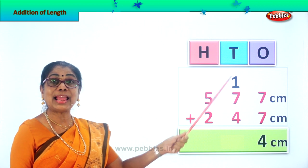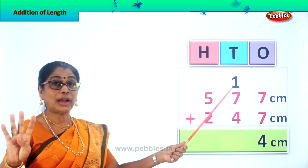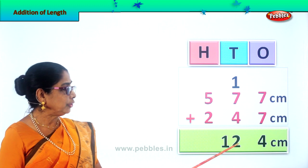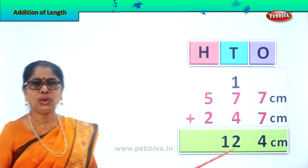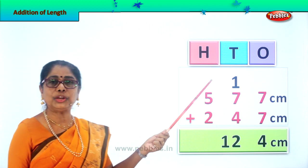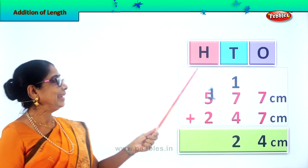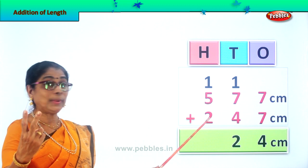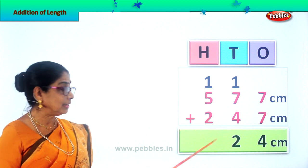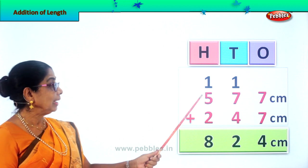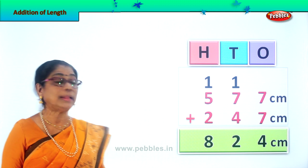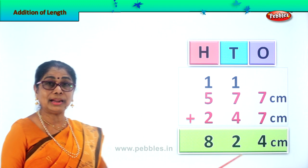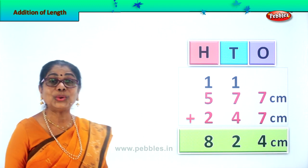Now let's add all what's in the 10's place. 7 plus 1 is 8. 8 plus 4 is 12. We leave the 2 in the 10's place and take the 1 ten up to the 100's place. Now we'll add all what's in the 100's place. 1 plus 5 is 6. 6 plus 2 is 8. So we write 8 down here. 577 centimeters plus 247 centimeters together equal to 824 centimeters. That's your answer — 824.